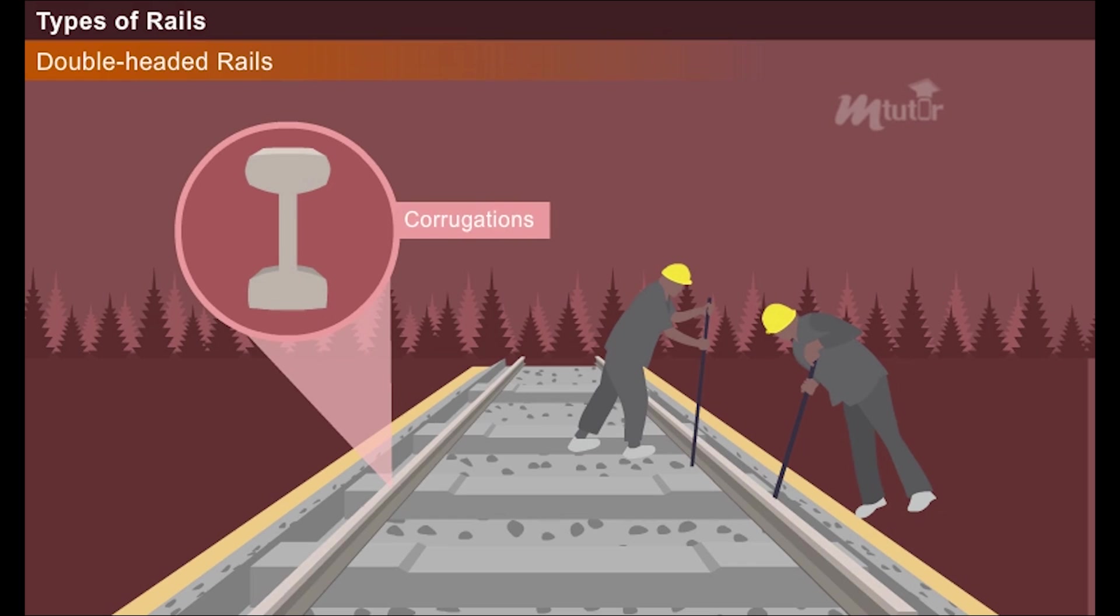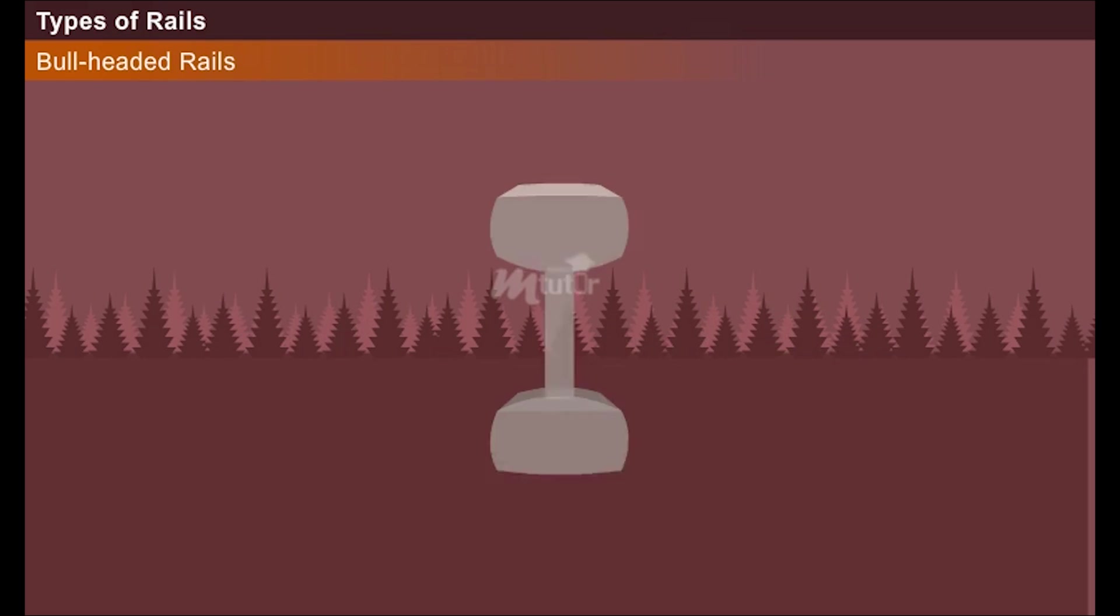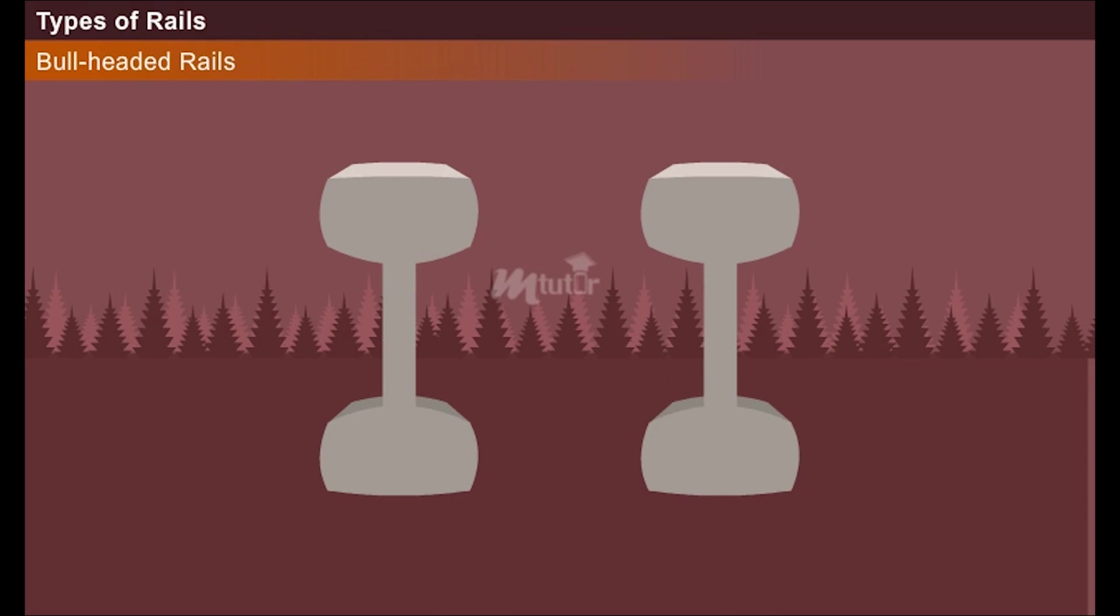To overcome the defect experienced in a double-headed rail, an improvement was made by making the head larger than the foot. These rails are known by the name bull-headed rails.